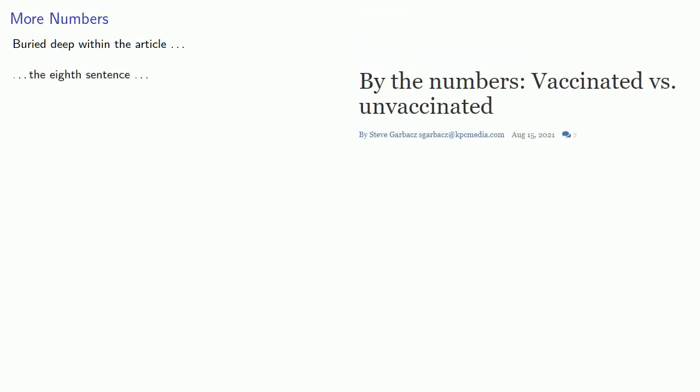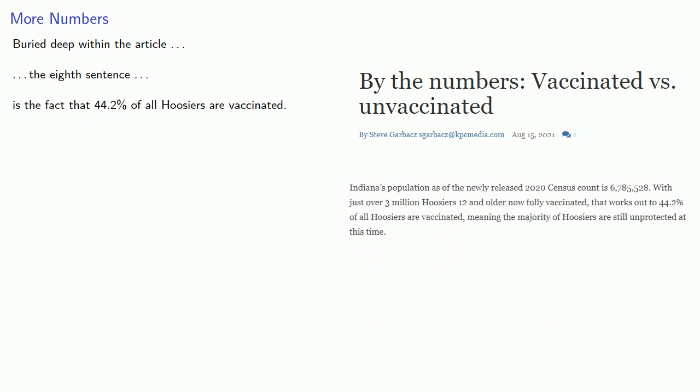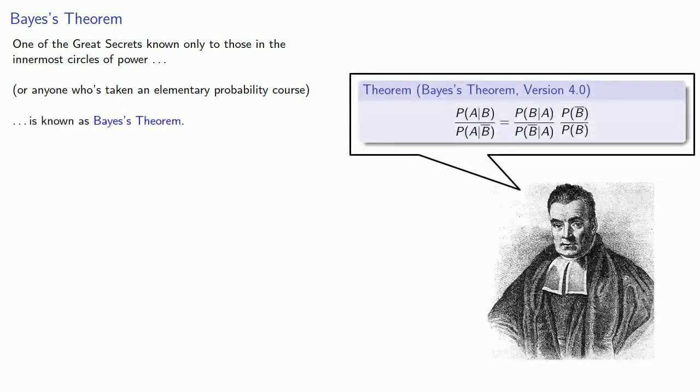Now, buried deep within the article, the eighth sentence, is the additional fact that we need, which is that 44.2% of all Hoosiers are vaccinated. One of the great secrets known only to those in the innermost circles of power, or anyone who's taken an elementary probability course, is known as Bayes' Theorem. This allows us to find the information that we want. You'll have to trust me on Bayes' Theorem. Or you could learn about Bayes' Theorem. There's plenty of good sources online. Here's one of the best.